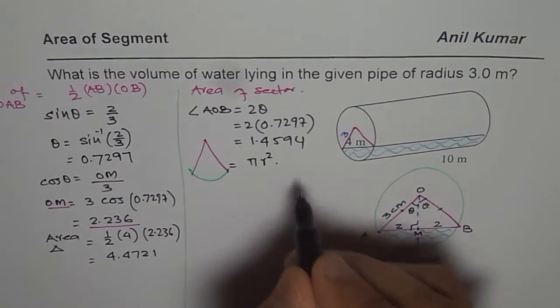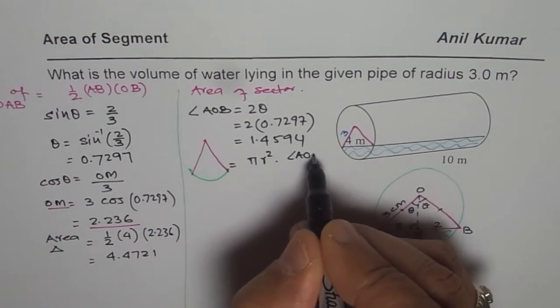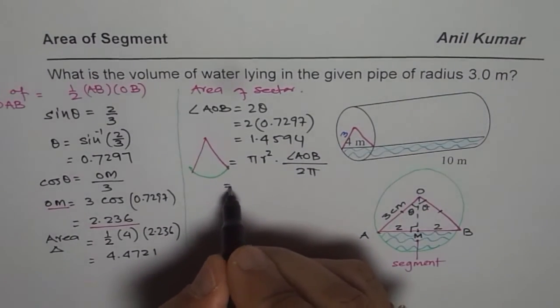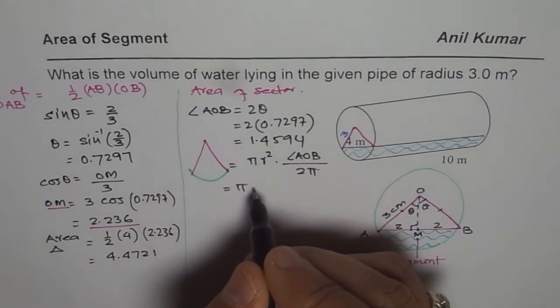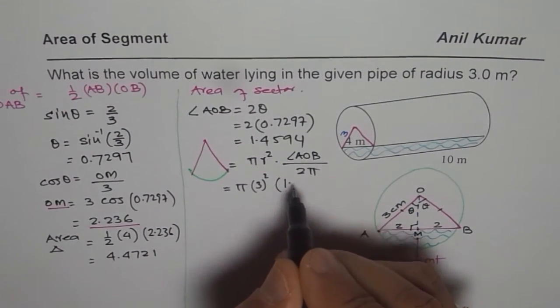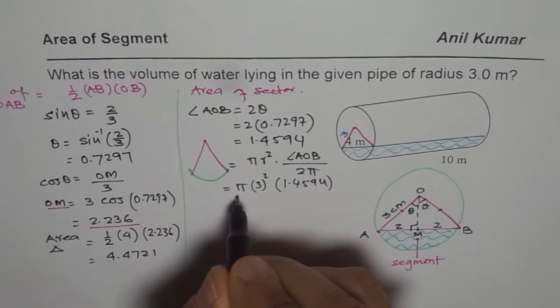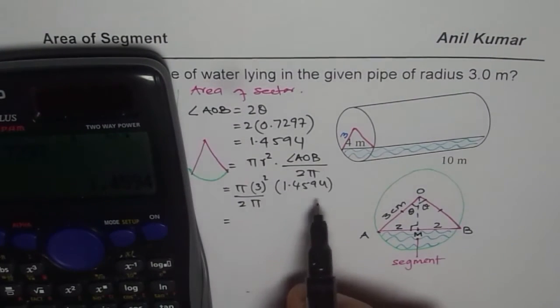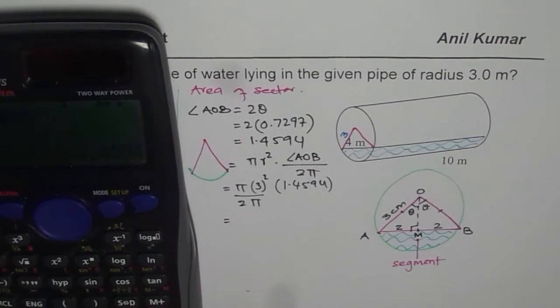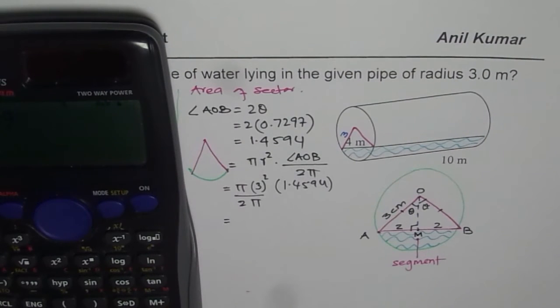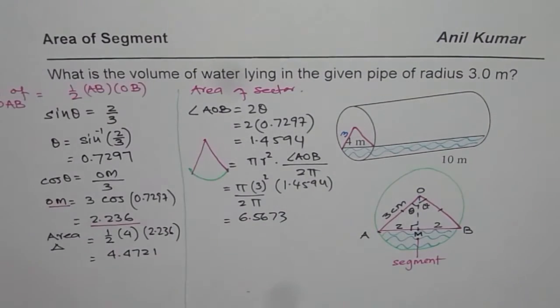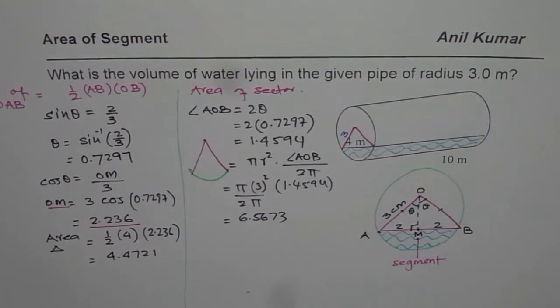So in this case we are given radius as 3. So 3 square, angle given to us is 1.4594 divided by 2 pi. Let's calculate. We already have 1.4594 in the calculator, we'll multiply that by 3 square which is 9, and pi cancel so we'll divide this by 2. So we get 6.5673 as the area of sector. Well my calculations could be wrong at times, but at least the method is correct I'm sure about it. So what you do is you do your calculations once again.